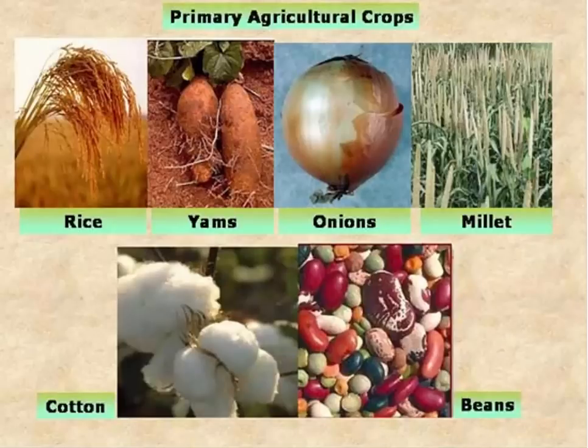The primary agricultural crops that you're going to find on the continent of Africa would be things like rice, yams, onions, millet, cotton, and beans.